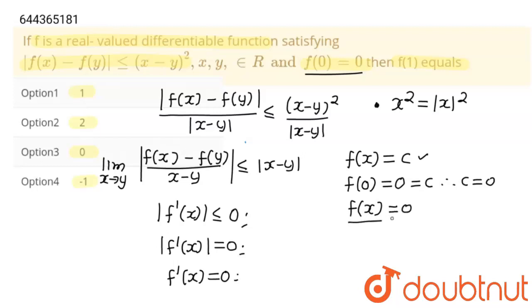Now, what is the value of f(1)? So when I put x = 1, we will get f(1) = 0. So option 3 is the correct answer.